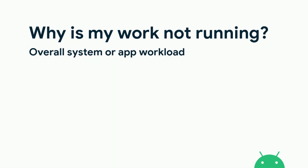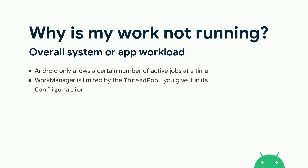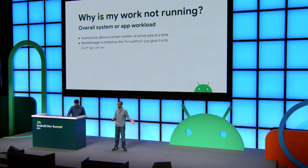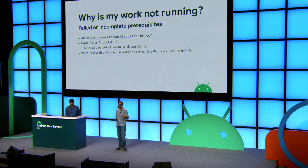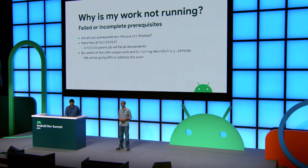It could also be that your OS or app is just doing too much work. JobScheduler only allows a certain number of active jobs at a time across all apps, so you might be exceeding that. WorkManager is also limited by the thread pool you configure — by default that's between two and four jobs, so if you're trying to do ten things at once, some will be queued for later. You could also have failed or incomplete prerequisites. A failed parent job will fail all its descendant jobs — if you haven't hit this yet, that's the expectation in WorkManager. If you're using unique work with the append policy, make sure the parent job hasn't failed, because everything you keep appending will keep failing. We'll be giving APIs to address this soon.